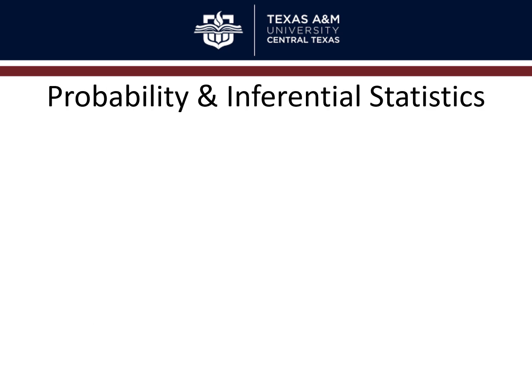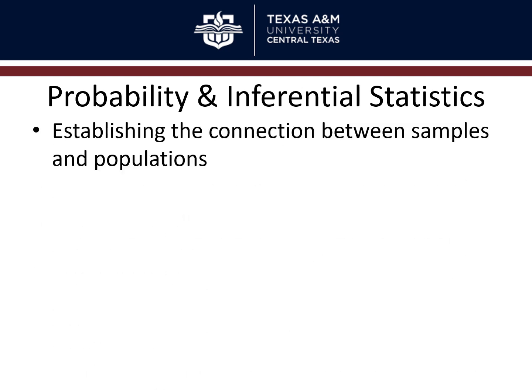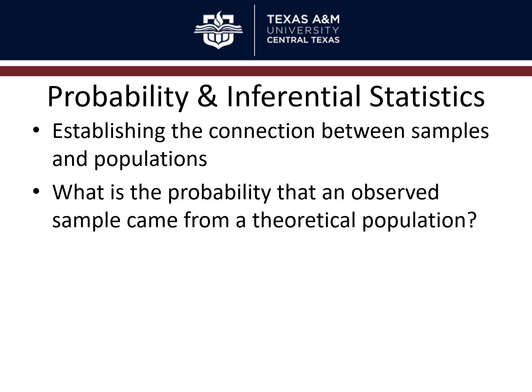Why does that matter for inferential statistics? Really, probability is what connects samples and populations. We're interested in large groups of people and events, but we can never measure all of them in one study, so we always settle for getting a sample. We find something out about that sample — for example, the average score was this. But is that average score representative of the population from which the sample was drawn? That's where we get into probability.